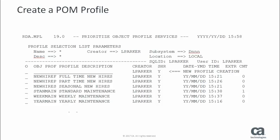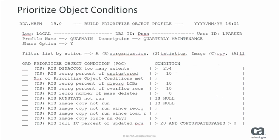Let's create a POM profile to apply quarterly maintenance to certain objects. We'll specify the letter C for Create on the blank line, name our profile Core Main, and type Quarterly Maintenance as the profile description. We'll press Enter, and then the Build Prioritize Object Profile panel appears. This panel contains the POCs. You can filter the list of POCs by the type of maintenance action that you are planning.